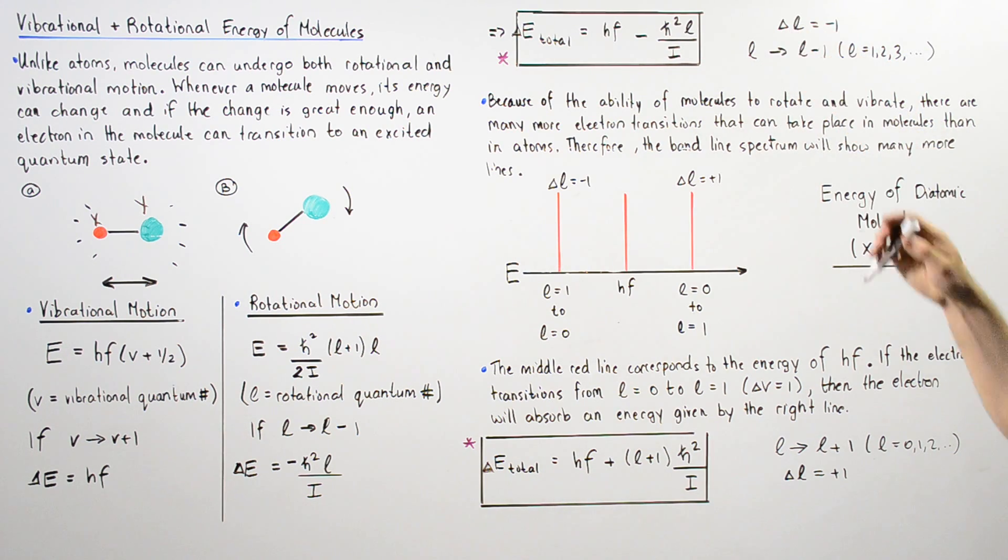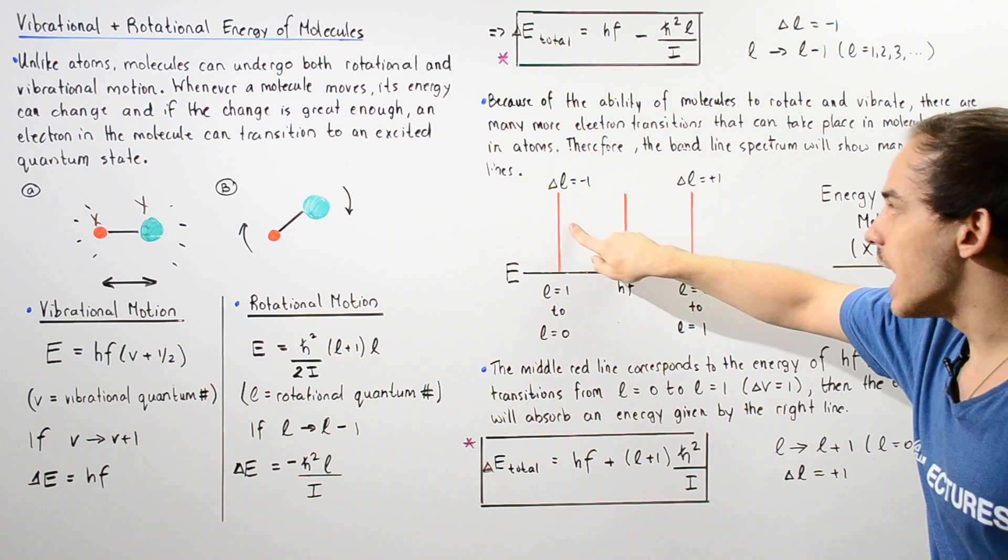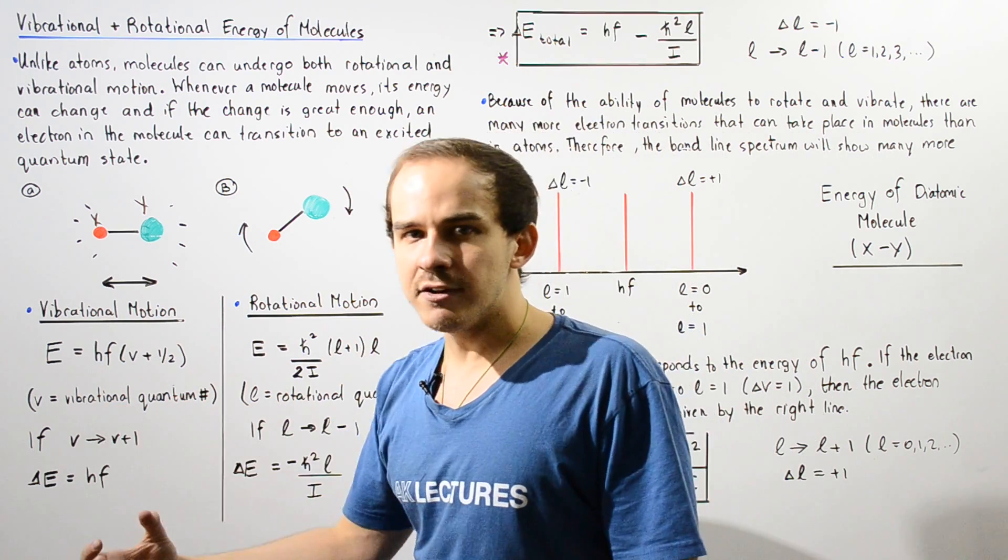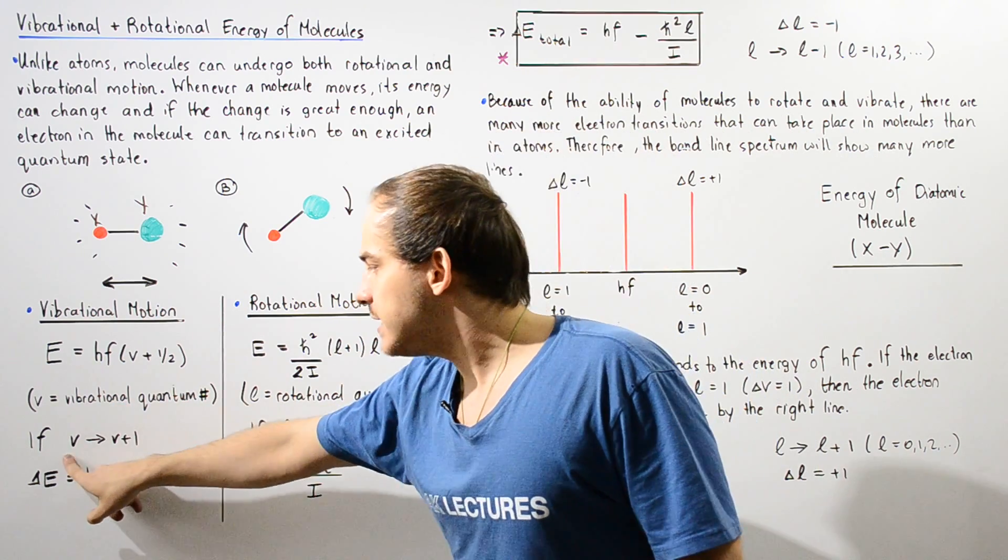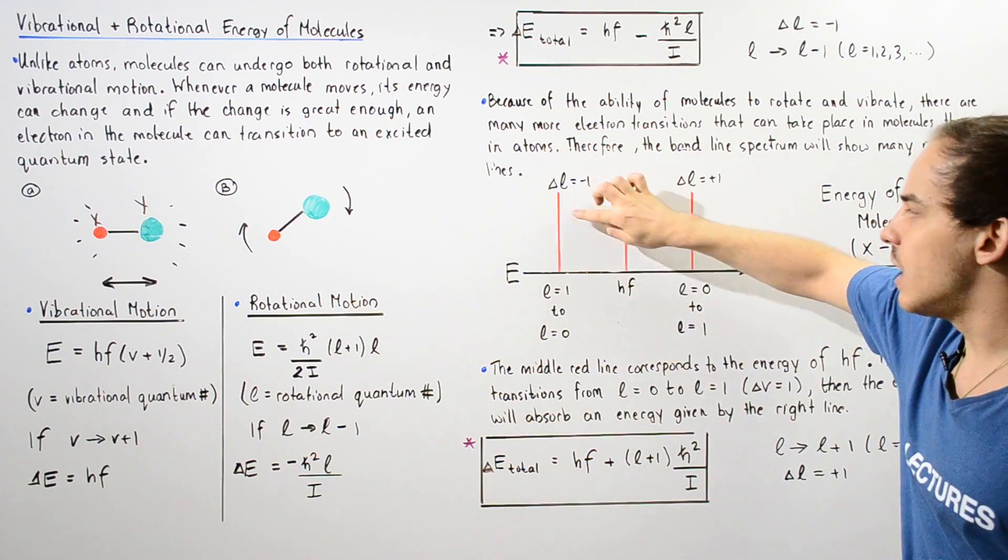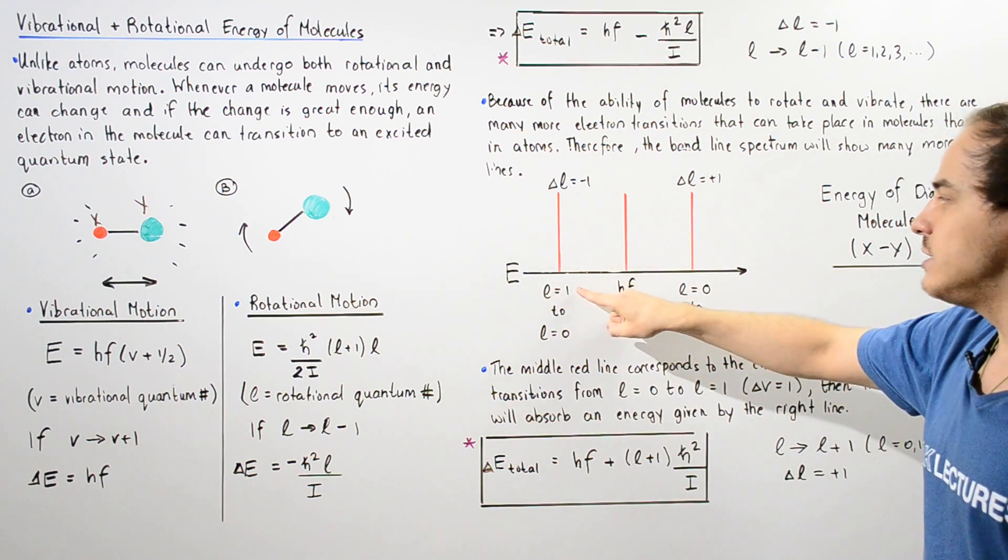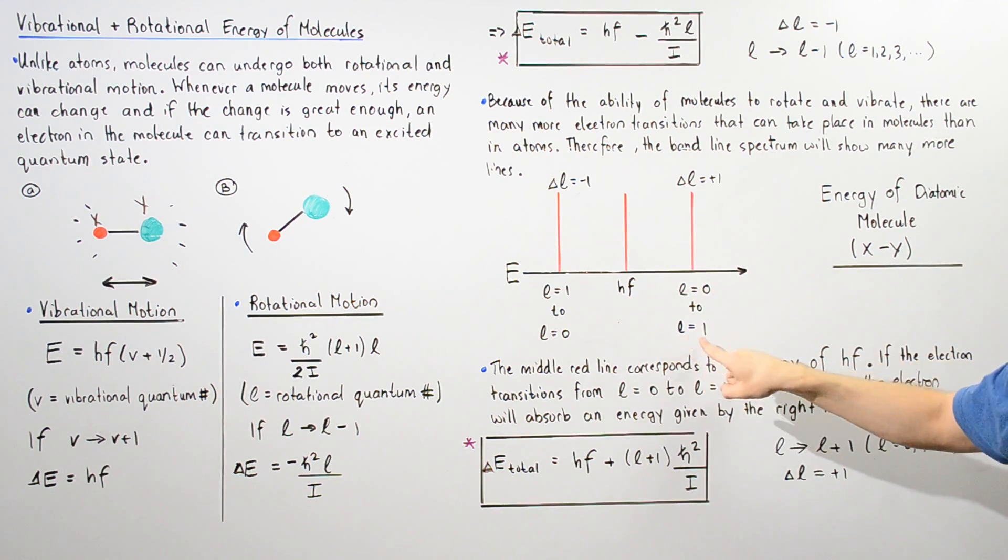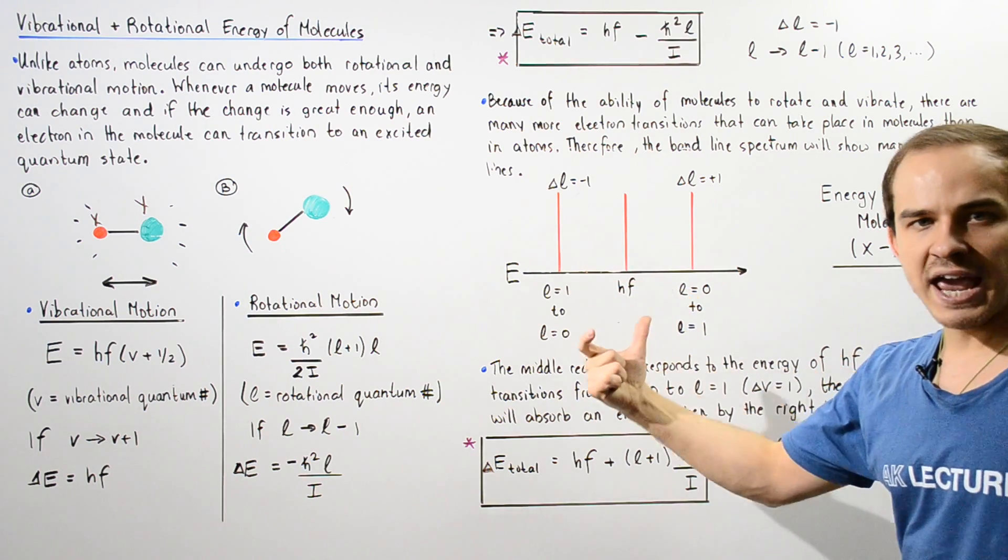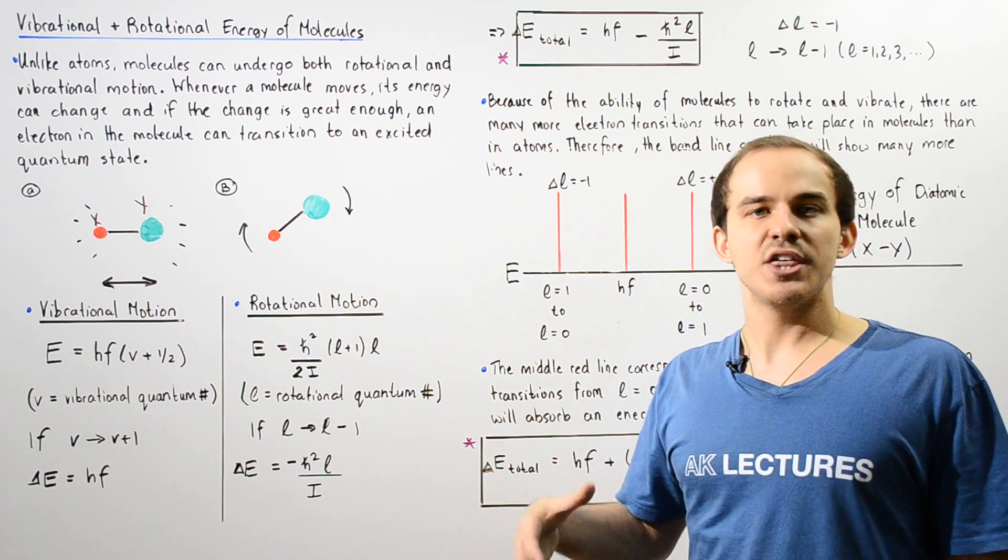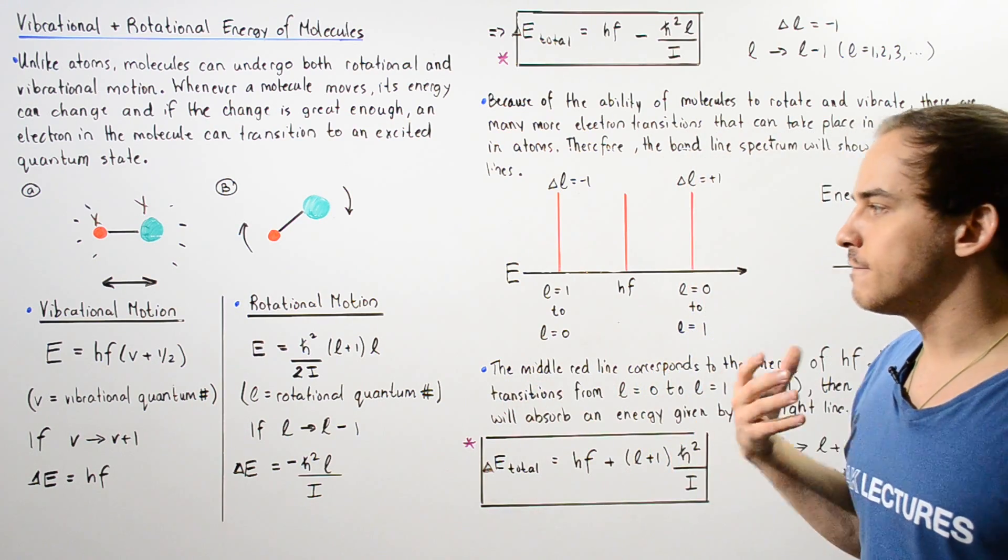Where in this case, our delta L was negative one. So this first line basically corresponds to our electron absorbing energy and jumping from V to V plus one and jumping from L to L minus one. So this line corresponds to L equals one to L equals zero. And this corresponds to L equals zero to L equals one. And in both cases, the electron is said to gain some photon of energy that has some given frequency.